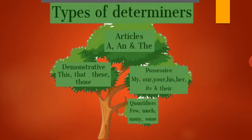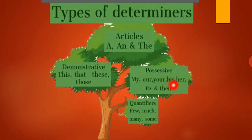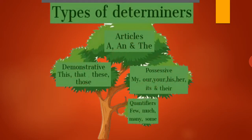Now we have types of determiners. We have four types of determiners. First are articles: A and The. Second, demonstrative determiners: this, that, these, those. Third, possessive determiners: my, our, your, his, her, its, their. And the last one is quantifiers: few, much, many, some, enough, a little, a few. These all are called determiners, and we will discuss them one by one.